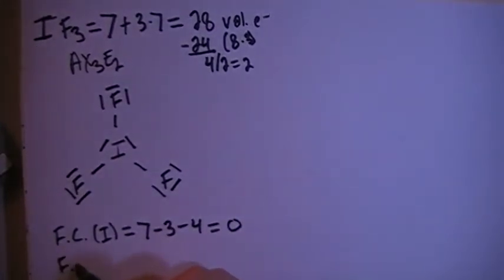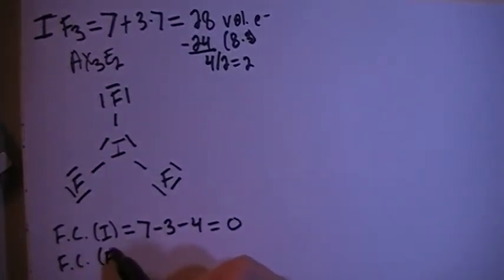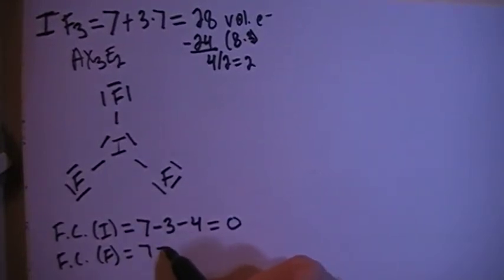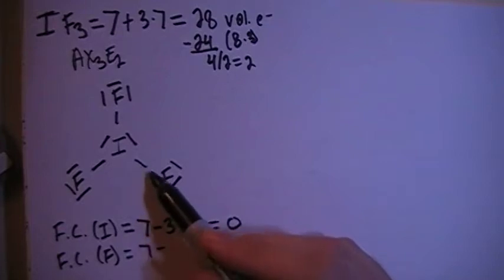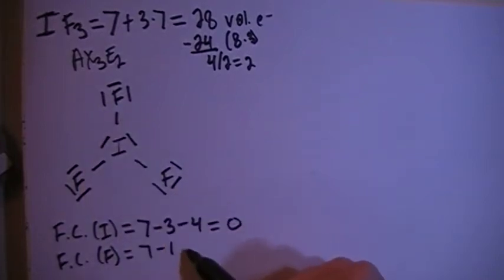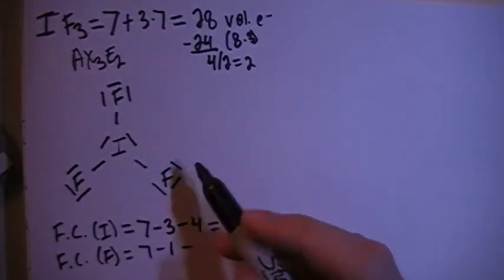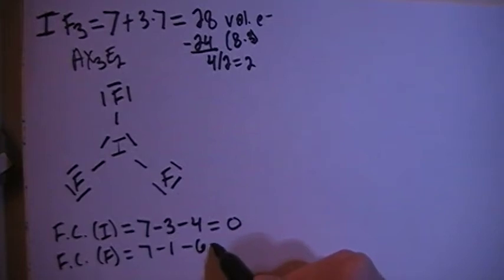And then the formal charge on each of the fluorines is going to be the 7 valence electrons brought in for each one minus a single bond on each fluorine, minus 2, 4, 6 non-bonding electrons on each fluorine as well for a formal charge of 0.